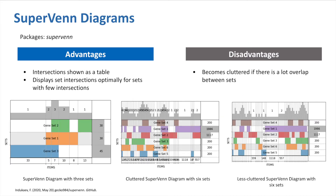Super Venn diagrams are not Venn diagrams in the traditional sense, but they display Venn diagrams in a tabular format, which can be easier to see the overlap. However, if there are a lot of small overlaps among the sets, the super Venn diagram can become really cluttered as well. But this can be fixed by ignoring the smaller intersections.